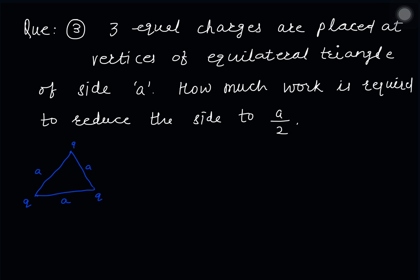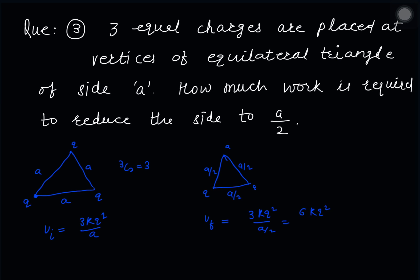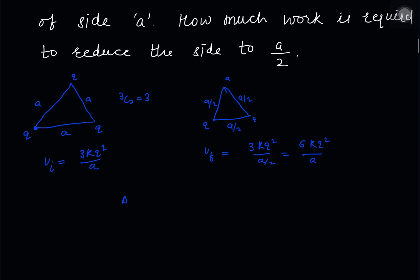For the combination of charges question, the initial configuration has charges separated by distance A, with initial potential energy kq²/A and 3kq²/A. The final configuration is an equilateral triangle with side length A, giving final potential energy 3×kq²/A = 6kq²/A. The work done is the difference in potential energies: U_final minus U_initial = 3kq²/A.